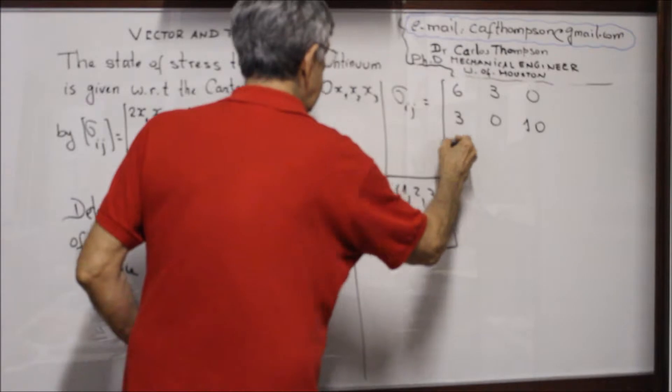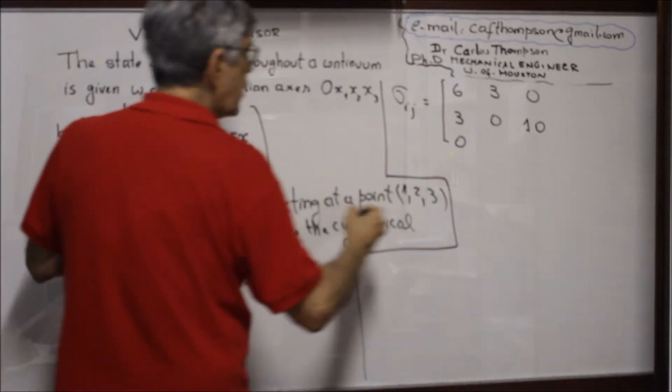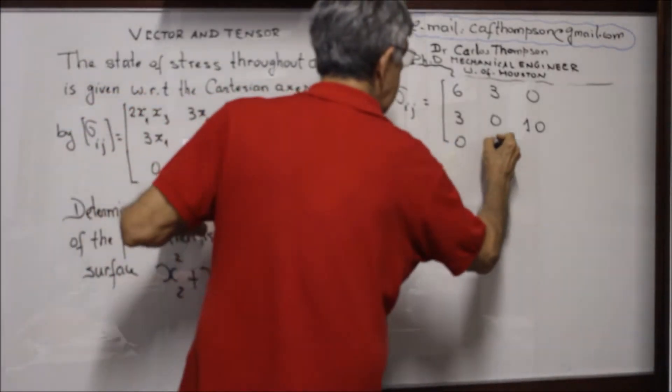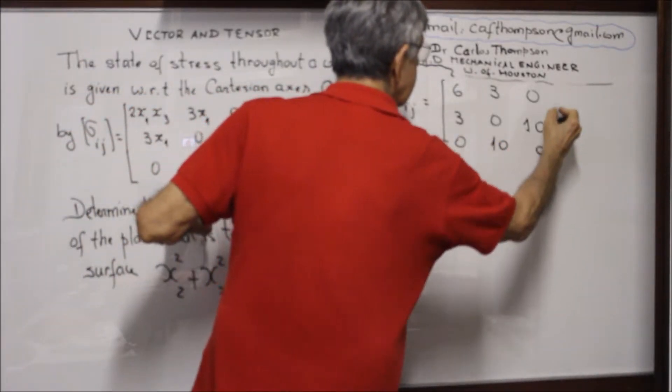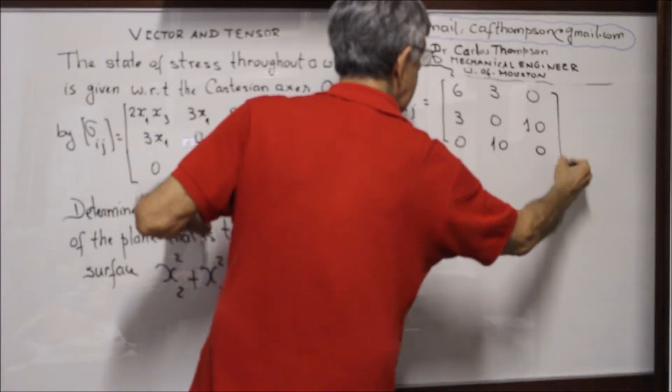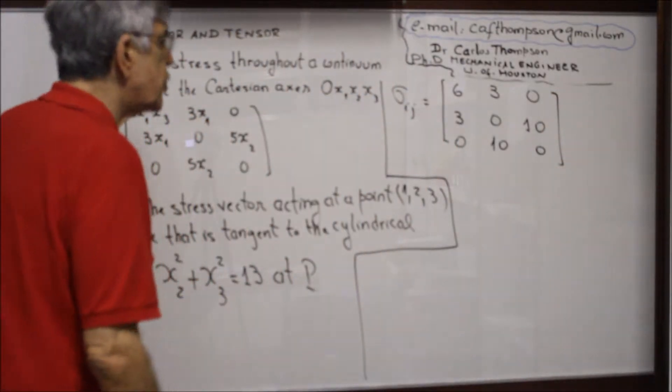The remaining entries: 5·X2 = 10, and the remaining diagonal entry is 0. So sigma_ij evaluated at point P is the matrix: [6, 3, 0; 3, 0, 10; 0, 10, 0].